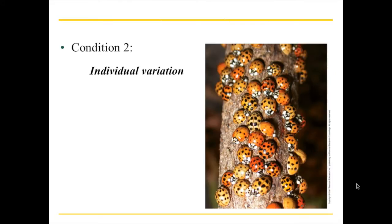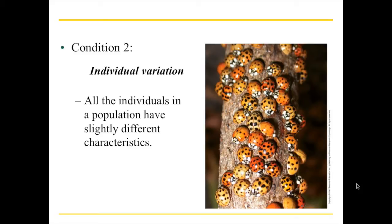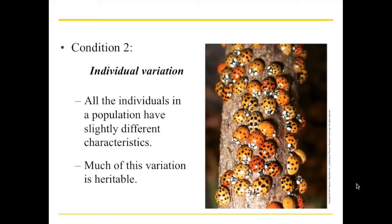The second condition, which is equally innocuous and very obvious, is that there is individual variation in nature — not everybody is the same. Because all individuals in the population have different characteristics, sometimes only slightly different, this variation contributes to that struggle. If everybody were exactly the same, the struggle for existence would simply be a game of chance, with nothing to do with inheritance or the characteristics the individual organism has.